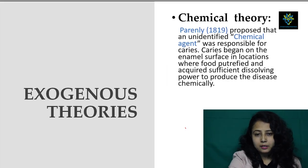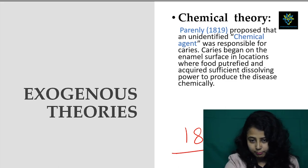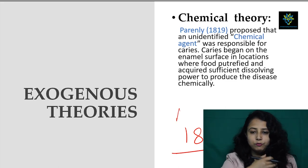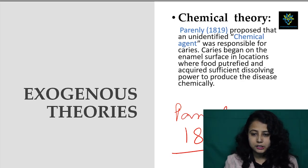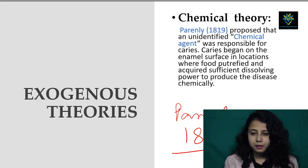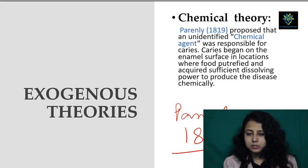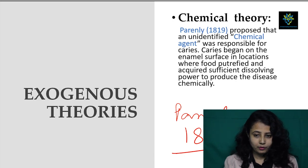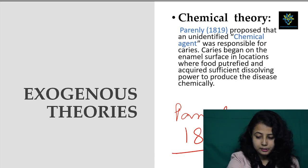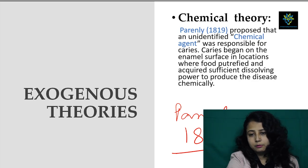Then comes the chemical theory under the heading of exogenous theory. It was proposed by Parenley in 1819. Here they said a chemical agent was responsible for caries — some chemical agent which is responsible for caries.